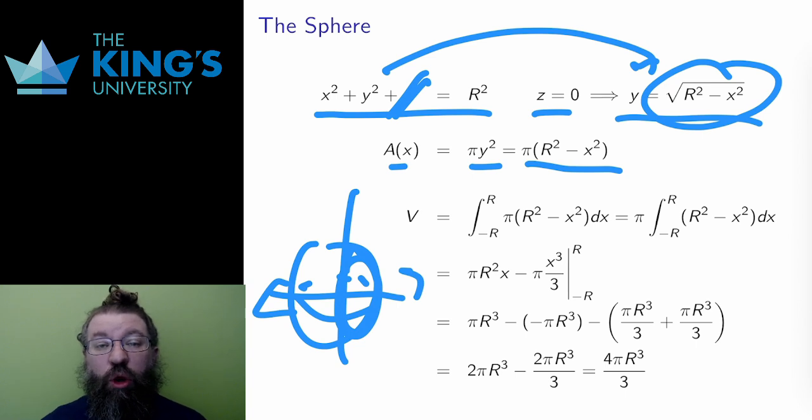This is what I need to integrate. And the integral will go from negative r to r, since that's how far the slices go out, starting at negative r at one end of the sphere and moving to r at the other end of the sphere.